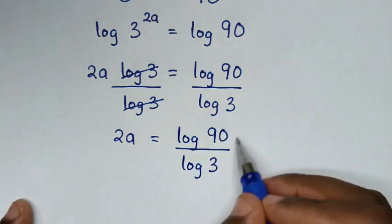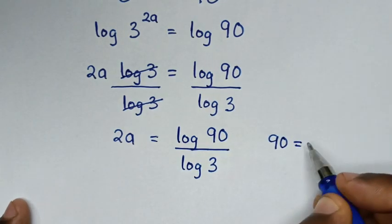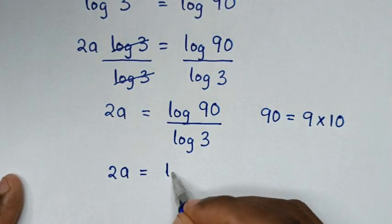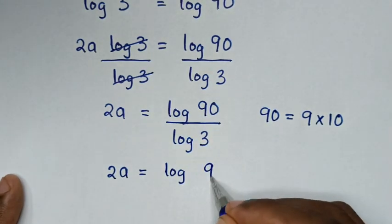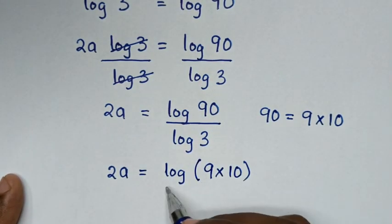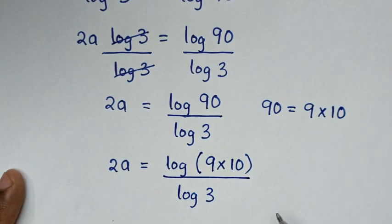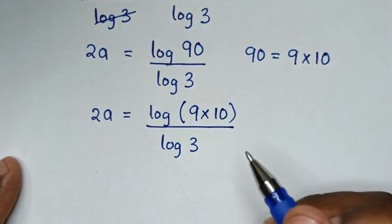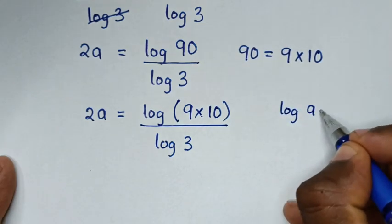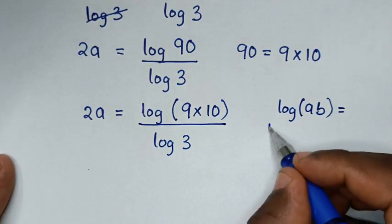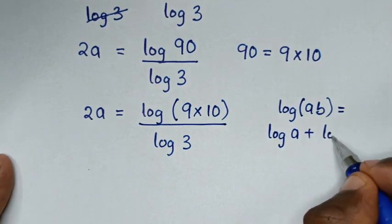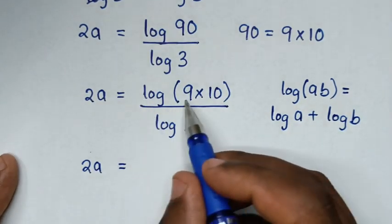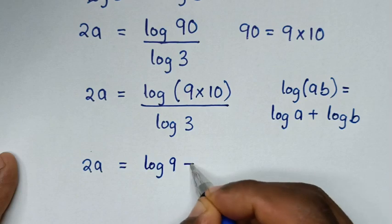Then in the next step, 90 is equal to 9 times 10. So we substitute, giving 2a equals log(9×10) over log(3). Now log(9×10) is in the form log(a×b), so it will be 2a is equal to log(9) plus log(10), all over log(3).